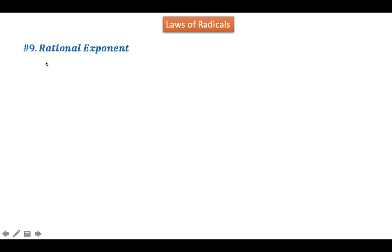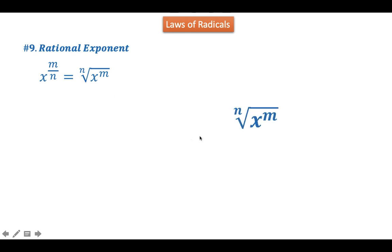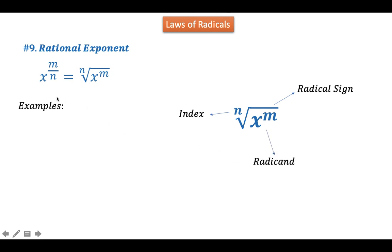Loss of Radicals. I will assume that you have already watched my previous video about the 8th law of exponents. This is the 9th law of exponent, which says x raised to m over n is equal to the nth root of x raised to m. This is what we call the rational exponent — notice that the exponent here is a fraction. We can transform this into a radical expression, where n is called the index, the symbol is called the radical sign, and the expression under the radical sign is called the radicand. This law serves as the transition from an exponent to a radical expression.